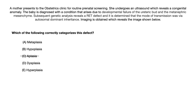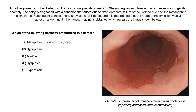For metaplasia, the best example is Barrett's esophagus. If they're going to give you Barrett's esophagus, they'll show you an image taken during an EGD. The description might say metaplastic intestinal columnar epithelium with goblet cells replacing the normal squamous epithelium. The normal lining of the esophagus is replaced by the lining of the stomach due to the harsh acidic environment from reflux. That's what you'll probably get if they want you to pick metaplasia.